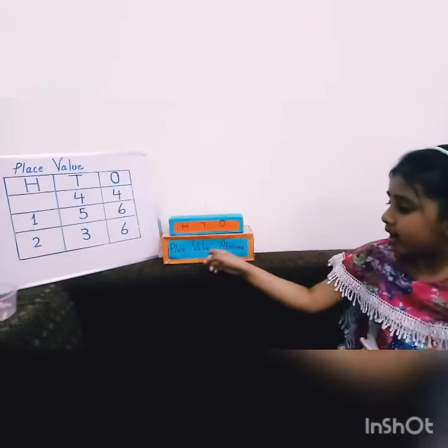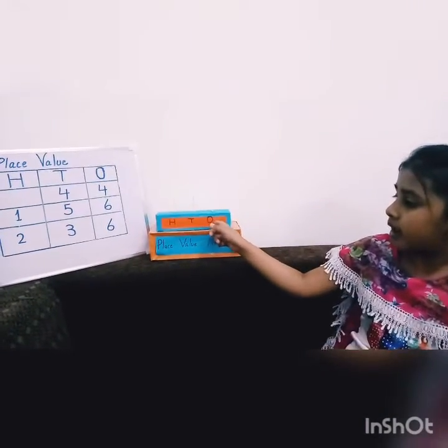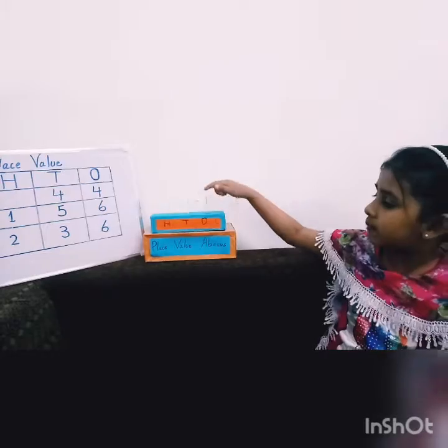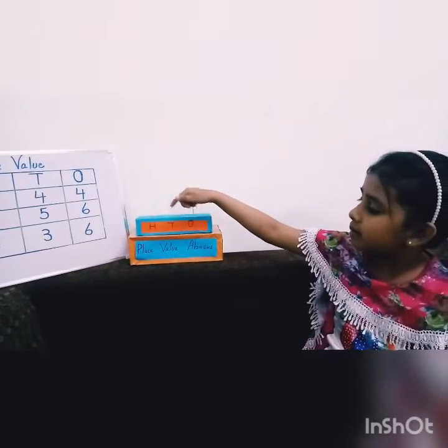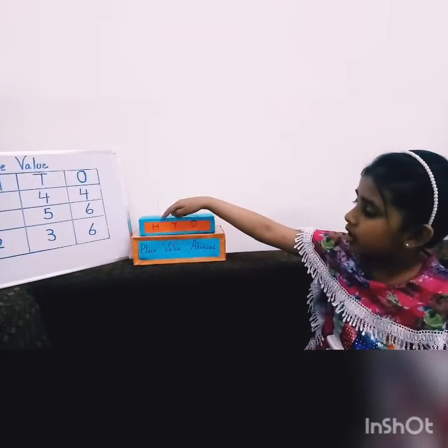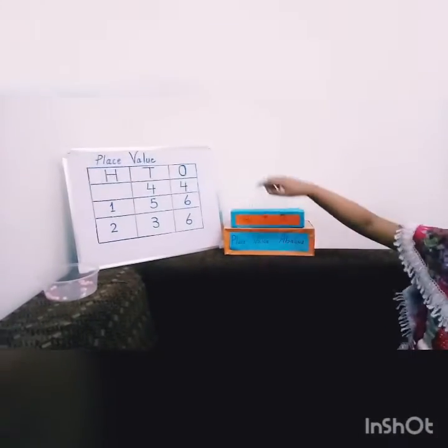Place value Abacus: 100 times 1. This spike shows the 1's place. This spike shows the 10's place. This spike shows the 100's place.